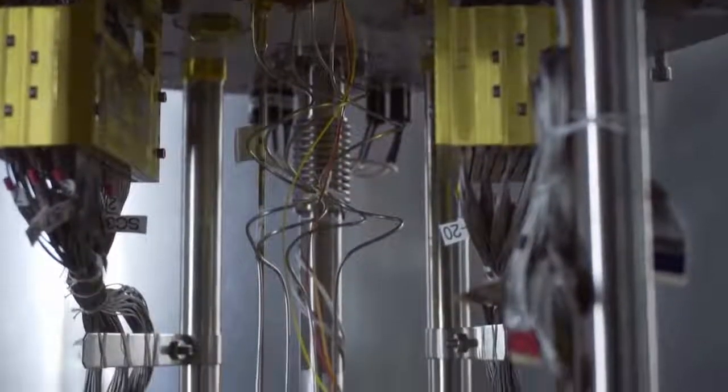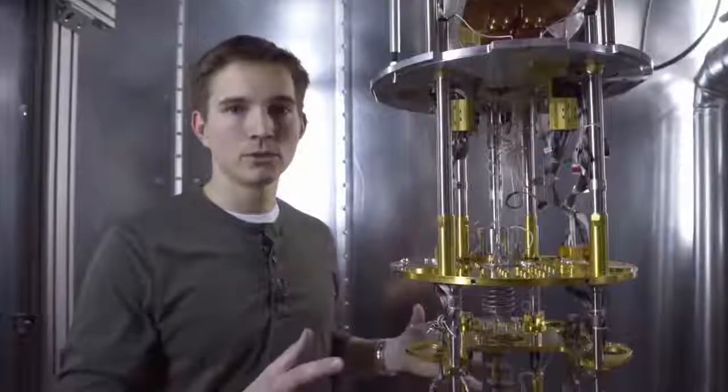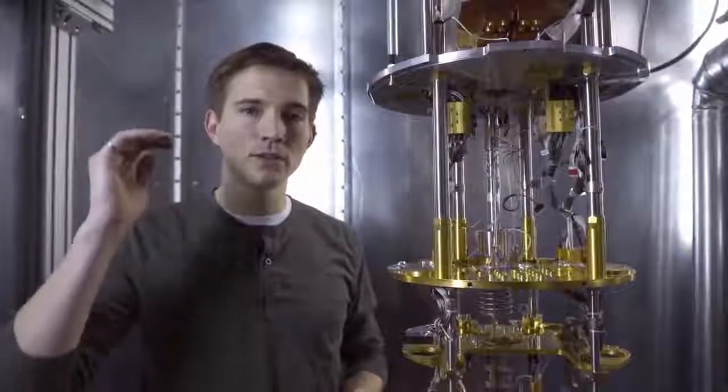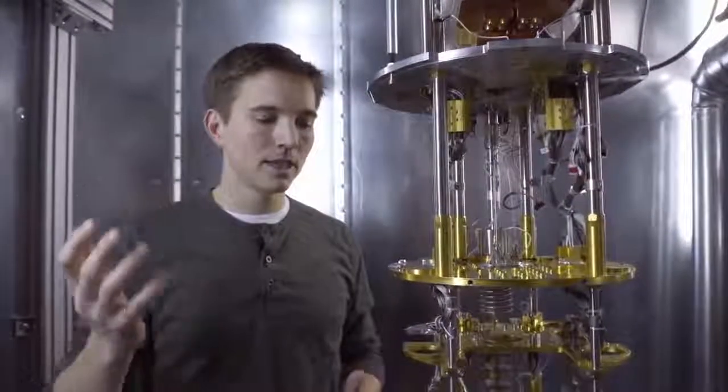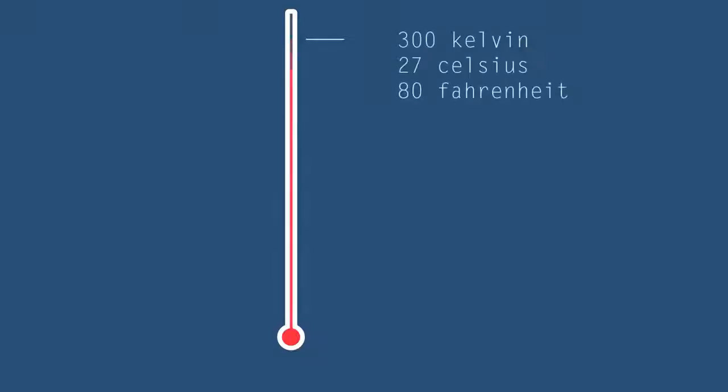The system we're looking at here is an ultra-low temperature cryogenic fridge. Because it works at such low temperature, we use the Kelvin scale to measure how cold it's getting. In the Kelvin scale, a warm room is like 300 Kelvin, and zero Kelvin is the lowest temperature that can be reached. Physicists refer to it as absolute zero.